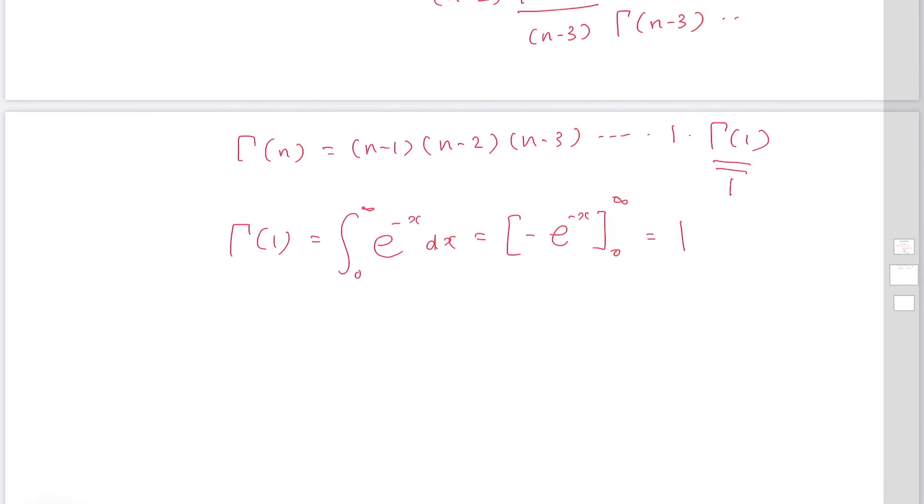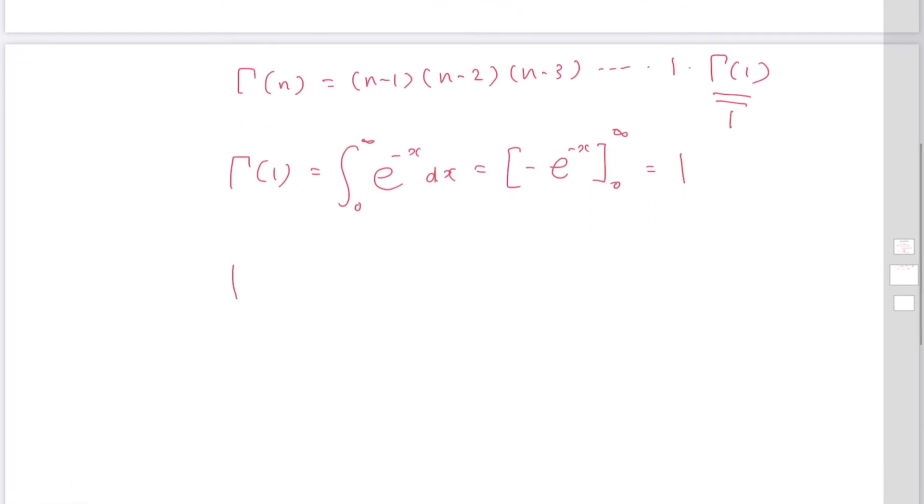So finally, you have gamma n equals n-1 times n-2 times n-3 and so on, up to 1. So this is the factorial of n-1.